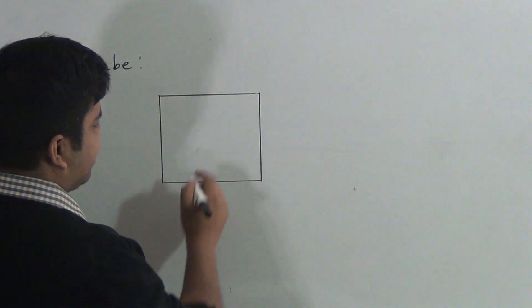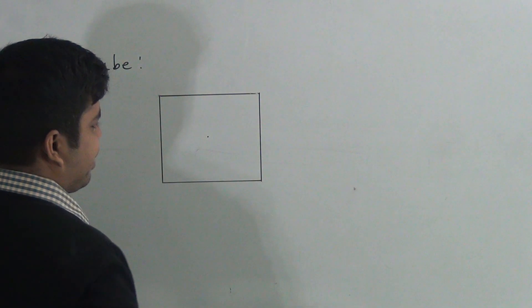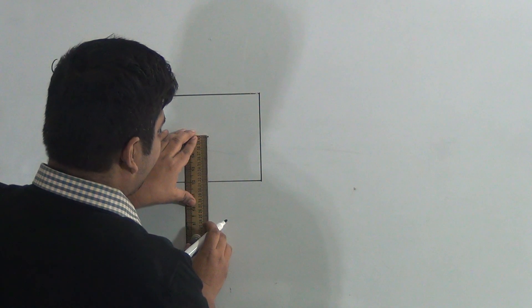Then we take the midpoint of this square. After that we draw another square.